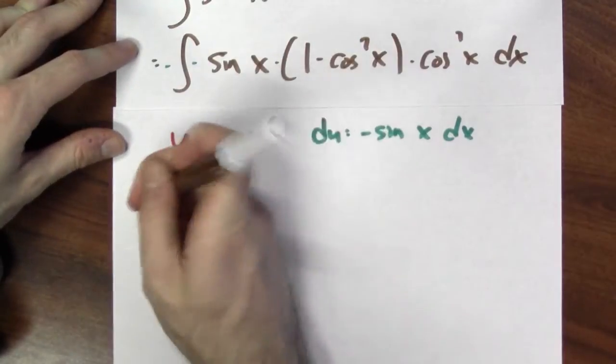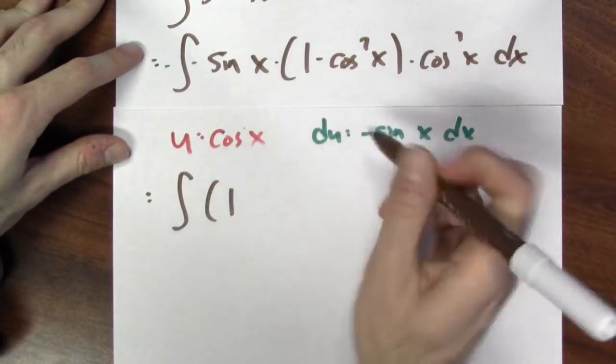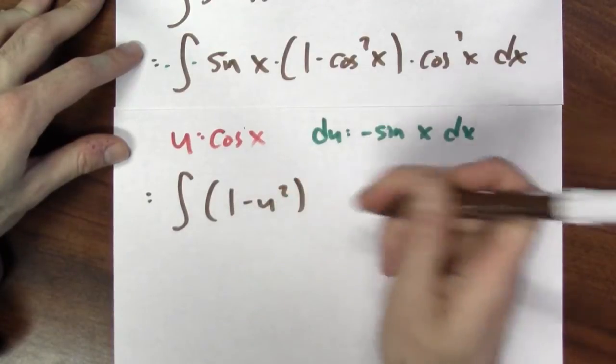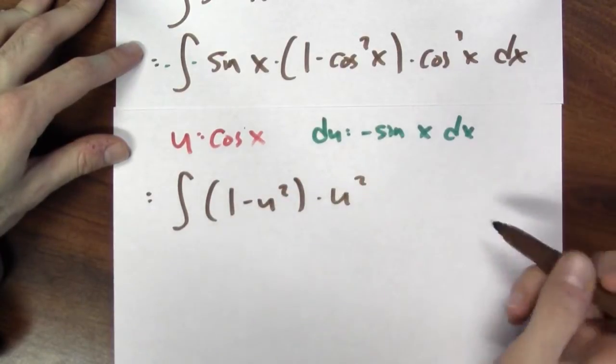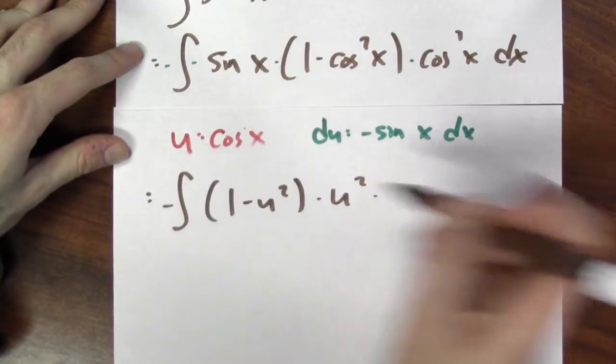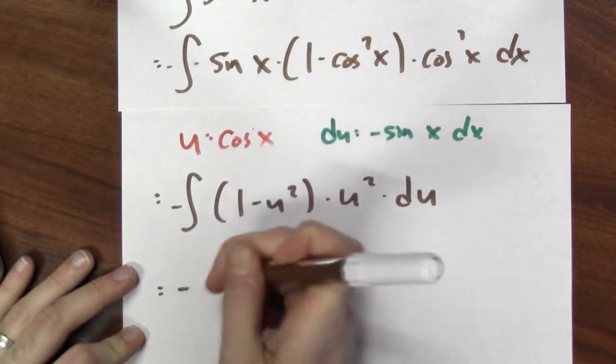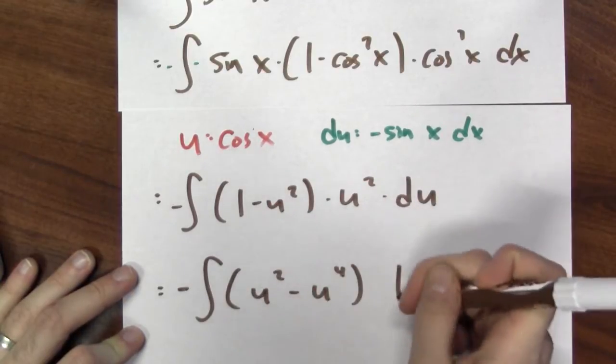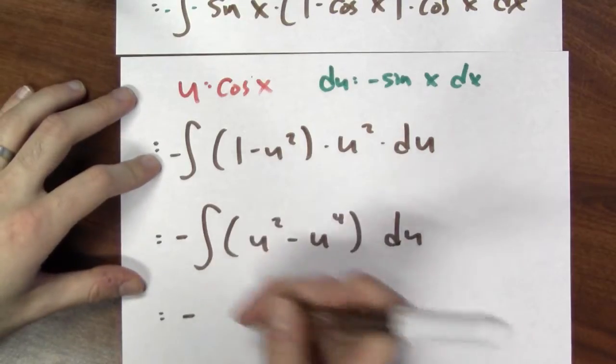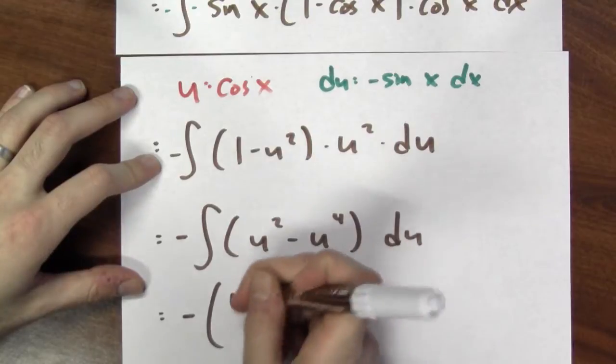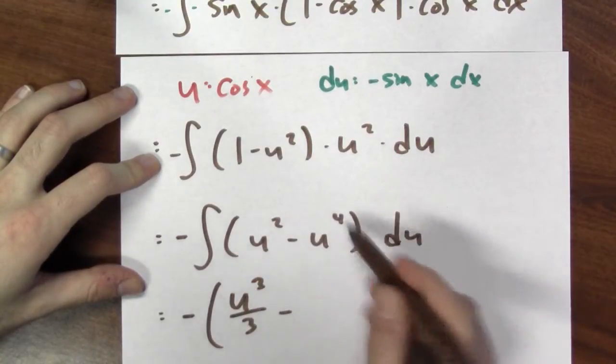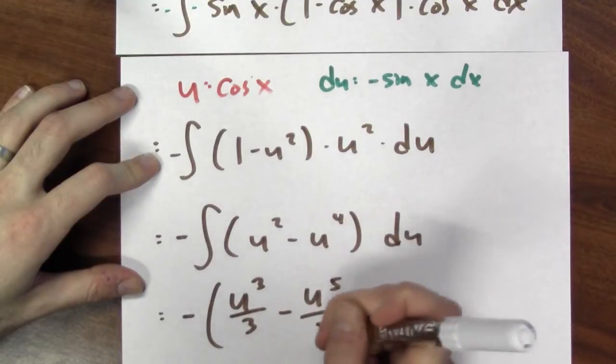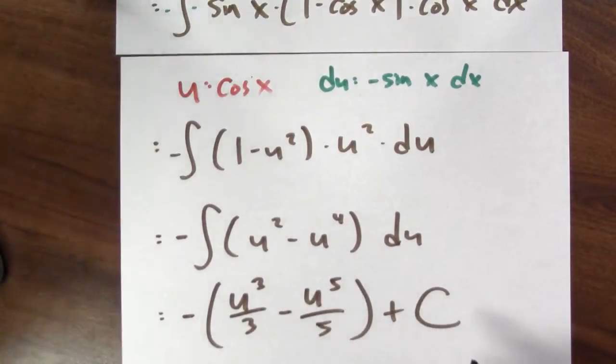So this becomes the integral of 1 minus u squared times u squared and then minus du. Now I expand. So this is negative the integral of u squared minus u to the 4th du. Now I'll integrate.